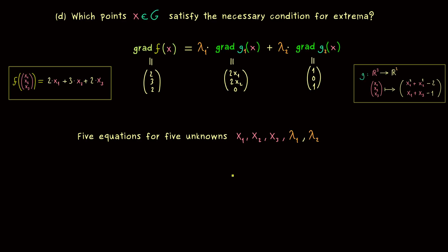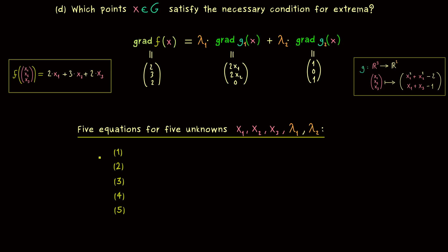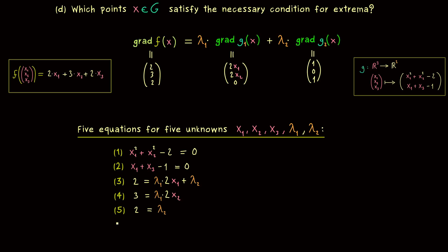We can now write down the full system. The first two equations are the two constraints — g equal to 0. The other three are the components of the gradient equation. The first: 2 equals lambda 1 times 2x1 plus lambda 2. The second: 3 equals lambda 1 times 2x2, with no lambda 2. The third: 2 equals lambda 2, with no lambda 1. We have our five equations for the five unknowns.